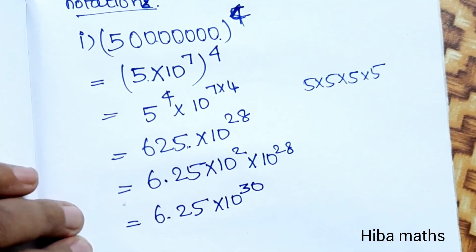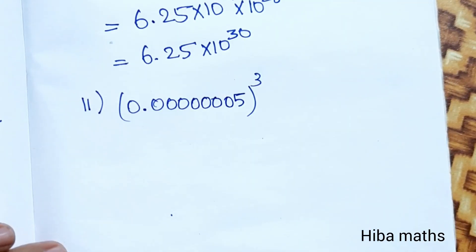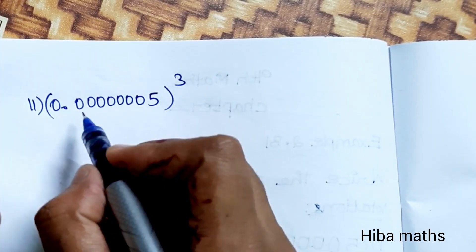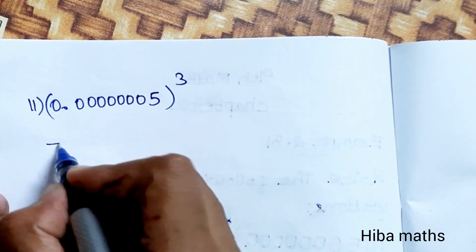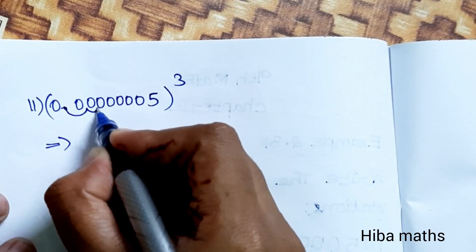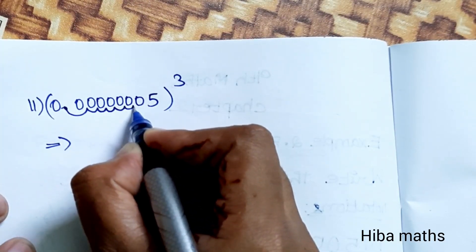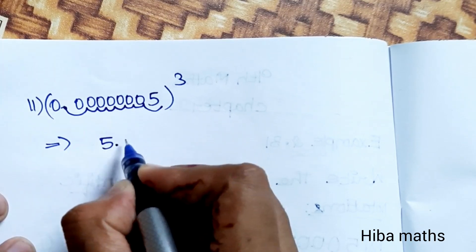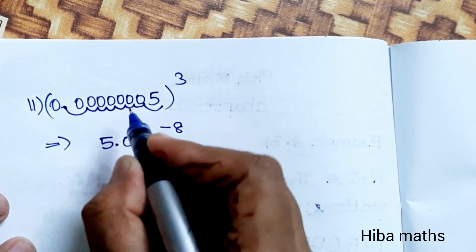6.25 into 10 power 30 — this is the final answer. Easy answer: add the powers. Second sub-division: 0.0000000005 power 3. Now count the decimal places: 0, 1, 2, 3, 4, 5, 6, 7, 8 — so 5 point into 10 power minus 8.